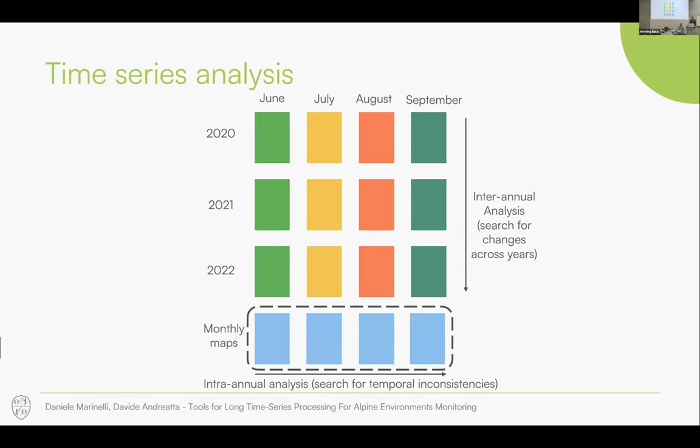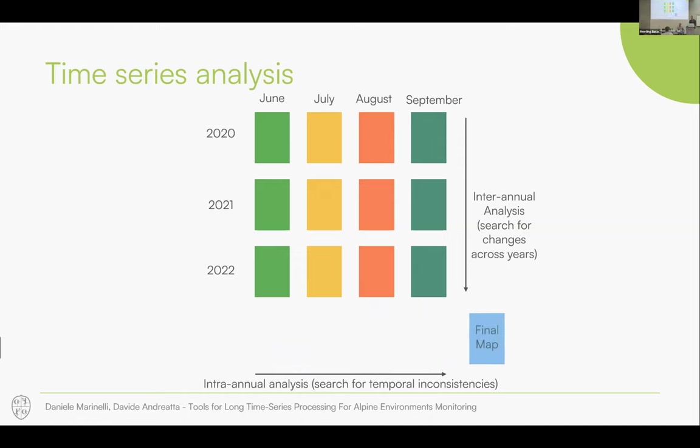By analyzing the time series in both directions, this allows us to reduce the number of missed detections and especially false alarms. At the end, we produce a map in which for each pixel we identify the date of detection and the reliability of detection — how reliable our detection was.